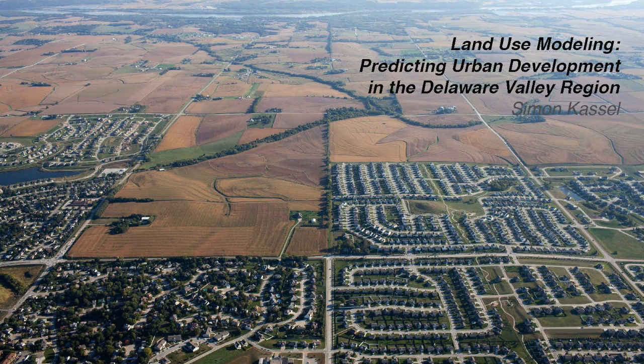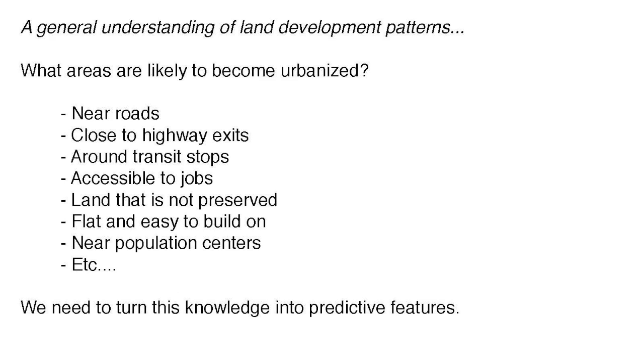We have built a model that predicts the proliferation of urbanized land in 11 counties that make up the Delaware Valley region. If successful, this model could be invaluable to planners who want to know where to preserve land, build infrastructure, and alter zoning.